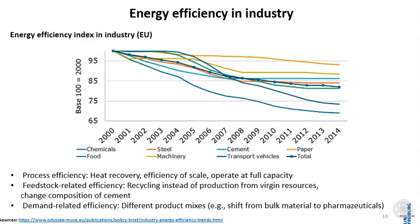The next big topic is energy efficiency in industry. Industry is one of the large energy consumers, alongside buildings and vehicles. Energy efficiency in industry is closely monitored because we need to know what is happening and what realistic savings potential remains. In the EU, there has been an increase in efficiency across different industry sectors — different material production such as cement, paper, and machinery production.